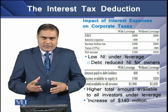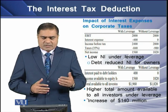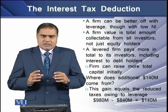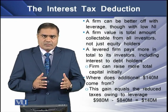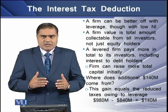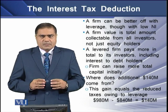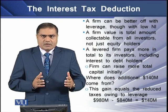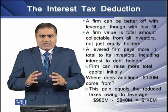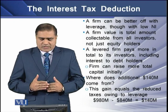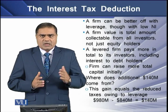We see that a higher total amount is available to all investors or capital providers under the leveraged policy — higher by $140 million. The question arises: where does this additional $140 million come from? Although it seems odd, a firm can be better off with leverage because a firm's value is the total amount that can be collected from all capital providers, not just equity holders. A levered firm pays more in total to its capital providers.